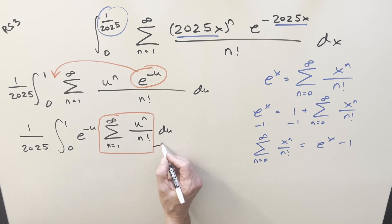So back to the problem. For this thing, we'll just plug in e to the u minus one and distribute it. We can distribute this into here. So what's going to happen, we have 1 over 2025, integral from zero to one. e minus u times e to the u. e to the zero, that's just one. e minus u times minus one, we get minus e minus u, du.